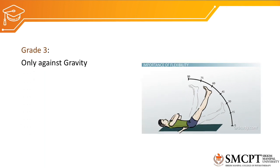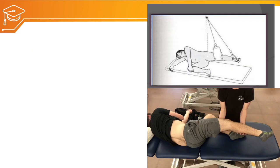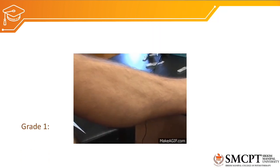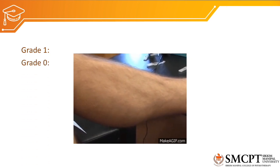If the muscle is not able to perform against gravity, we change the position of the patient — placing the joint in the horizontal plane — to test for grade 2 muscle strength. Grade 2 means the patient can fulfill the available range of motion in the horizontal plane but not against gravity. If unable to perform in horizontal plane, we grade it as grade 1 or grade 0. Grade 1 means there is only a flicker of contraction; grade 0 means no movement or contraction at all.